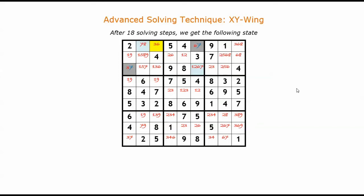You are given a Sudoku puzzle with one and only one solution. After 18 solving steps, you get the following state. Some squares are filled with numbers already. Other squares are marked with candidate numbers.